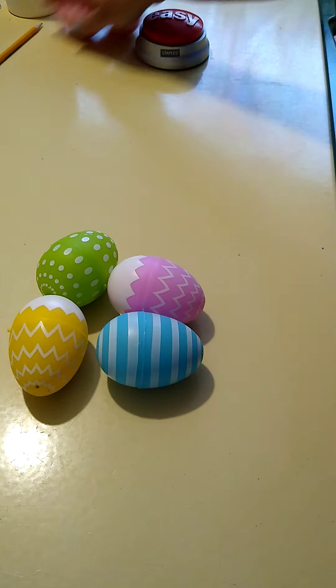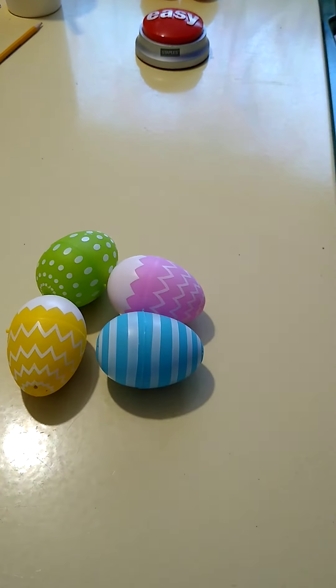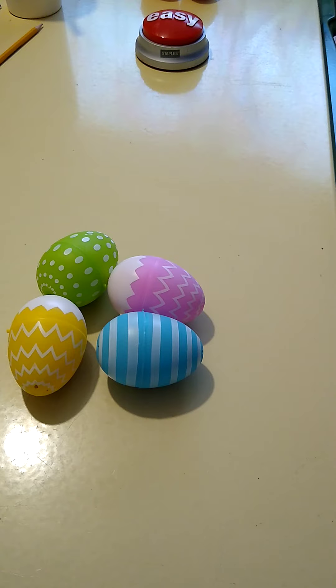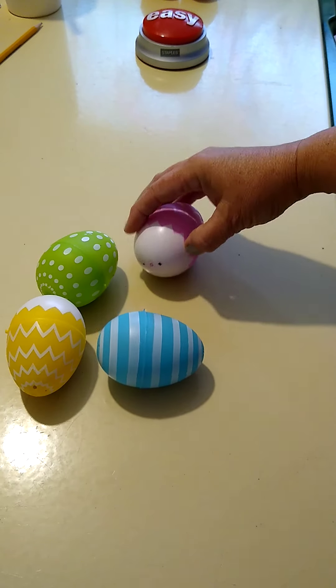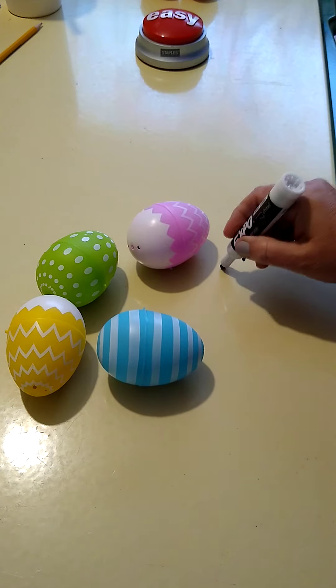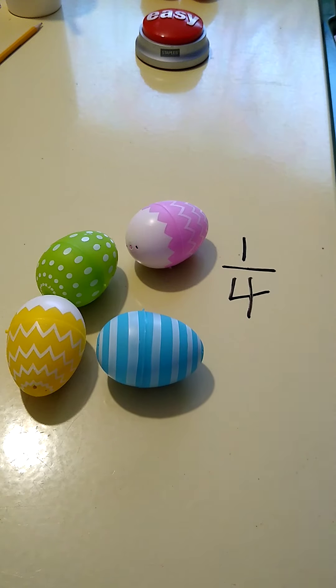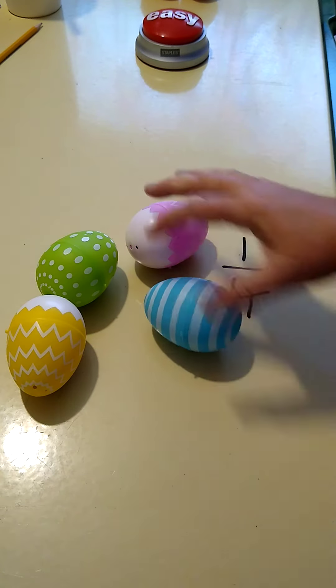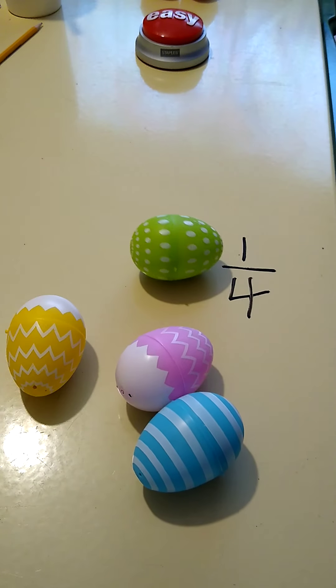Right here I have a group of eggs. This group is my whole. There are four eggs in this group, so each egg is a fourth. One-fourth of the eggs are pink, one-fourth are blue, one-fourth are green, and one-fourth are yellow.